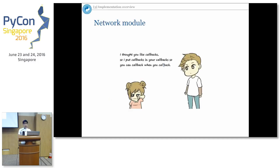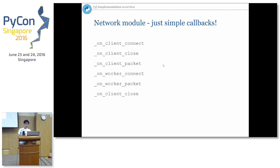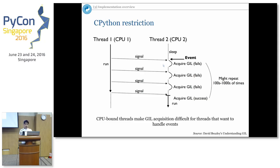Now let's move to implementation. For the network module, since it uses Tornado — an asynchronous library — you might wonder if it's complicated to write. Actually it's very straightforward because you just need to handle a few events: when the client makes a connection, create a connection package and send to the worker server; when the client closes the connection, handle that event; and when a package is received from the client, forward it appropriately.